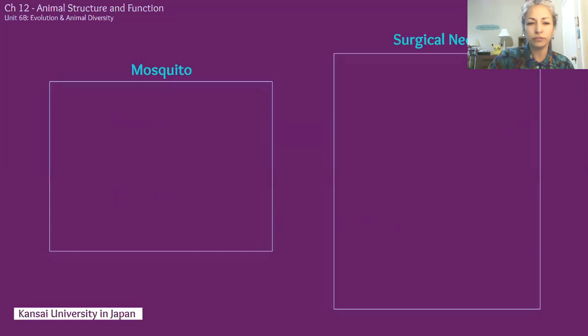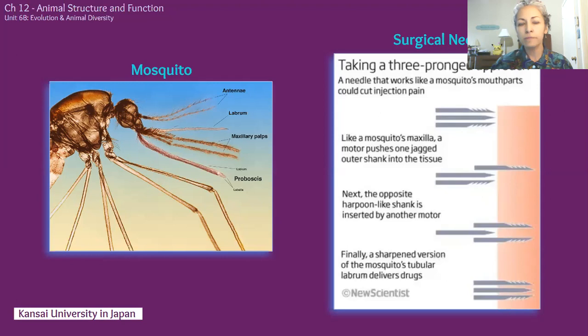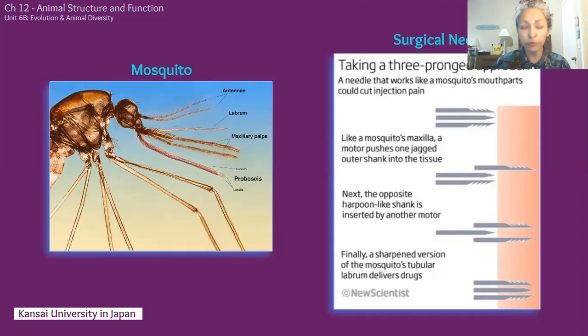The mosquito and surgical needles — nothing in common, right? But research at Kansai University in Japan realized mosquitoes sting painlessly. Why can't we do that in the medical world? Why can't we deliver medicines that way? So they're developing a three-pronged needle that works like a mosquito sting. The mosquito sting actually vibrates and has three prongs, and the central needle goes in painlessly. This surgical needle vibrates like the mosquito's proboscis and decreases the pain of a shot.